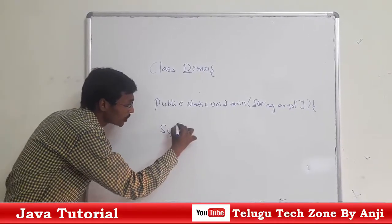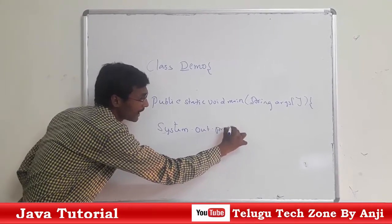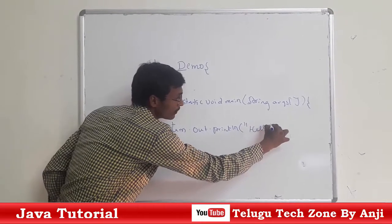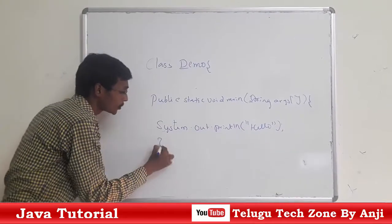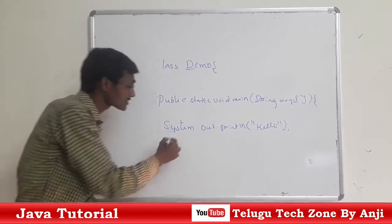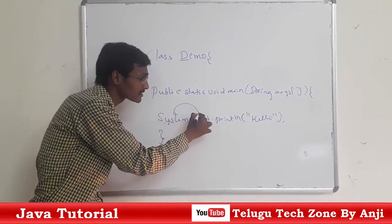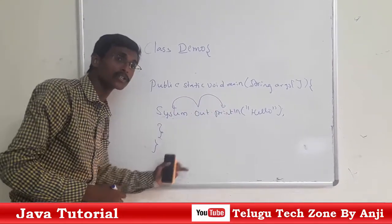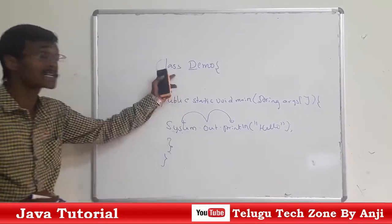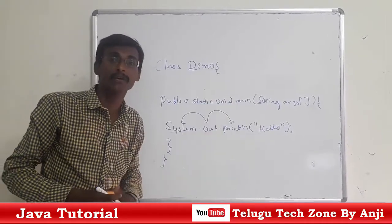System.out.println is used to print messages. Here, System is a predefined class, out is the reference, and println is a method which is used to print the message. And a class is a collection of variables and methods. Thank you.